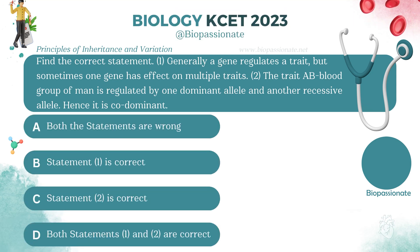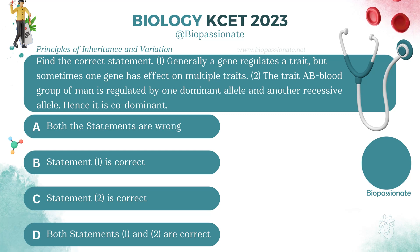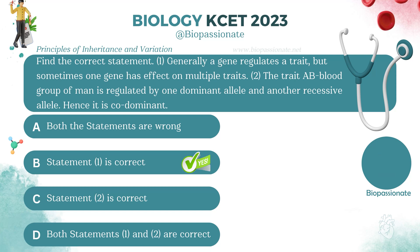Find the correct statement. Statement 1: Generally, a gene regulates a trait, but sometimes one gene has an effect on multiple traits. Statement 2: The trait AB blood group of man is regulated by one dominant allele and another recessive allele, hence it is co-dominant. Answer: Option B.